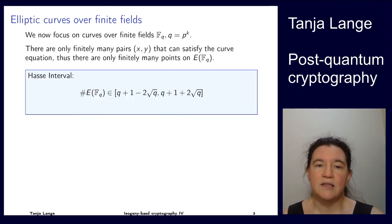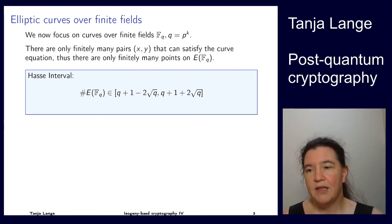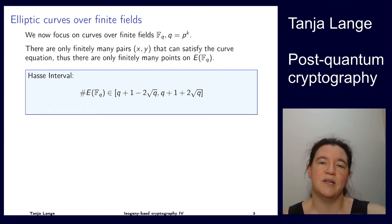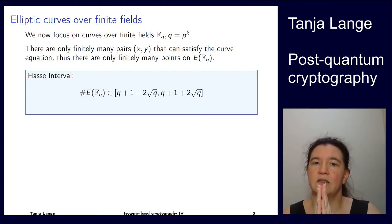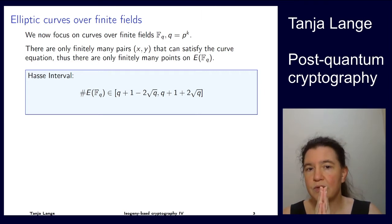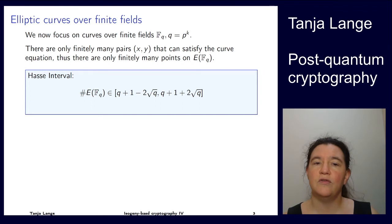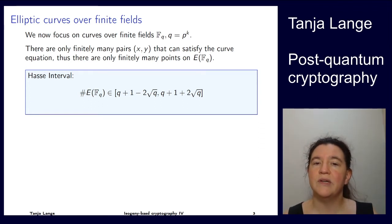The Hasse interval captures where the number of points lives. The idea that each x can give a point plus there's a point at infinity is good for understanding the center of the Hasse interval. It can be as low as q + 1 − 2√q and as high as q + 1 + 2√q, but not outside. So the number of points on a curve over a finite field F_q is always inside this interval.